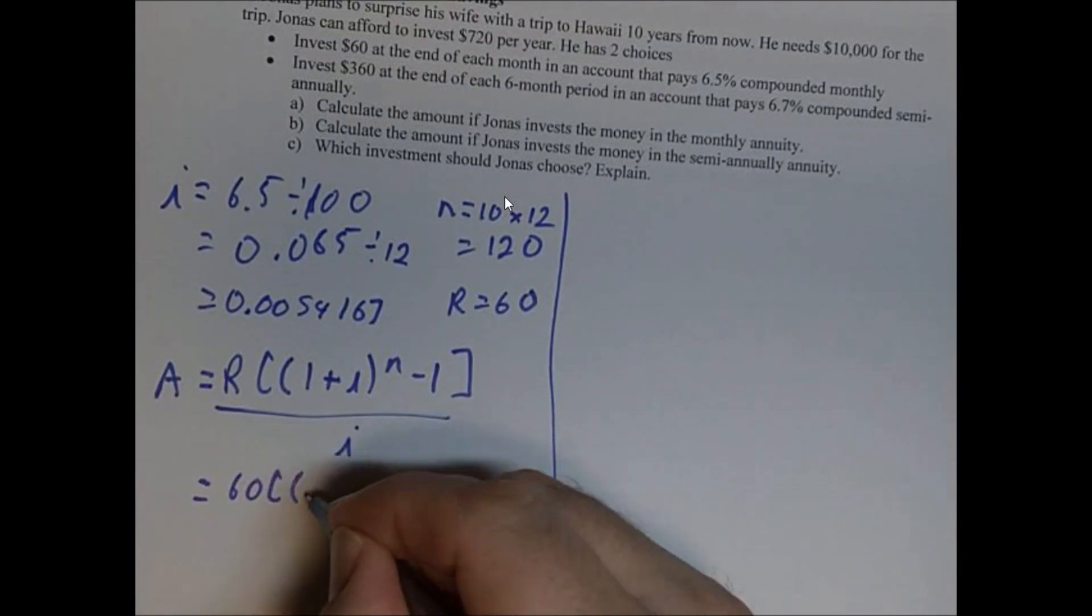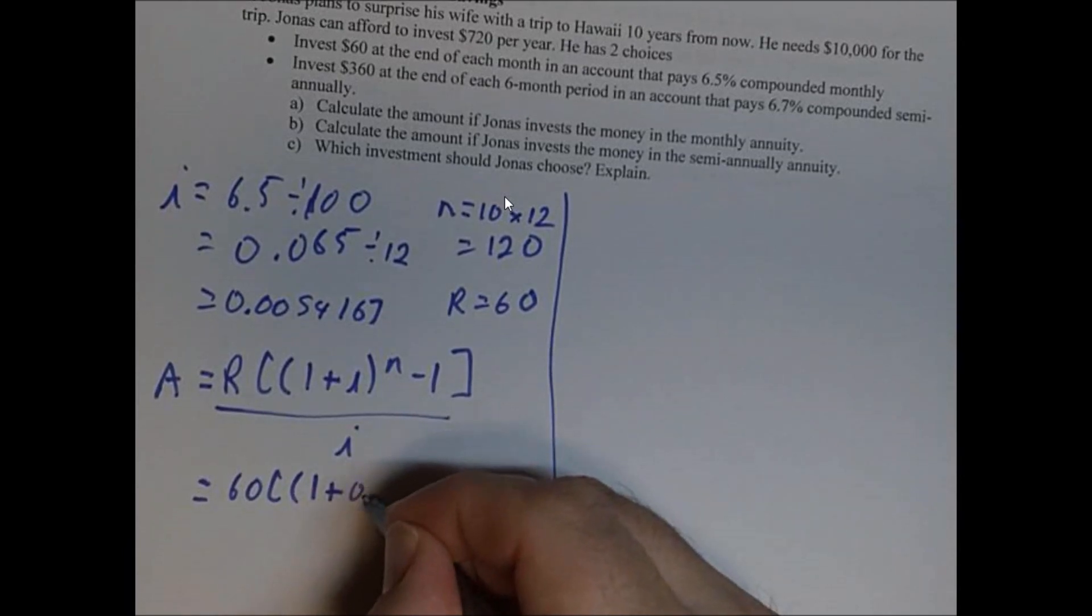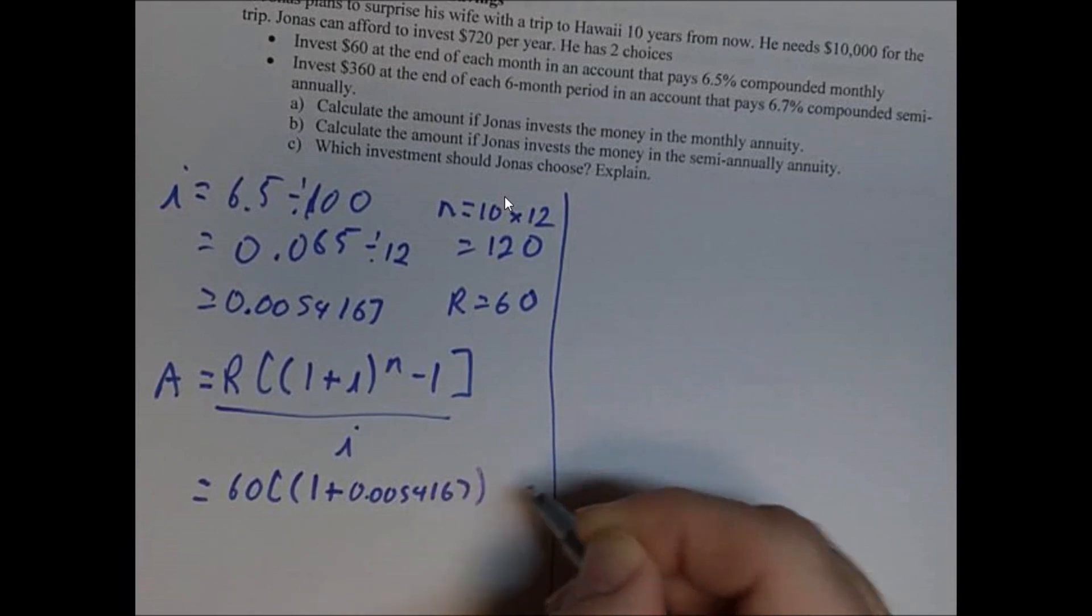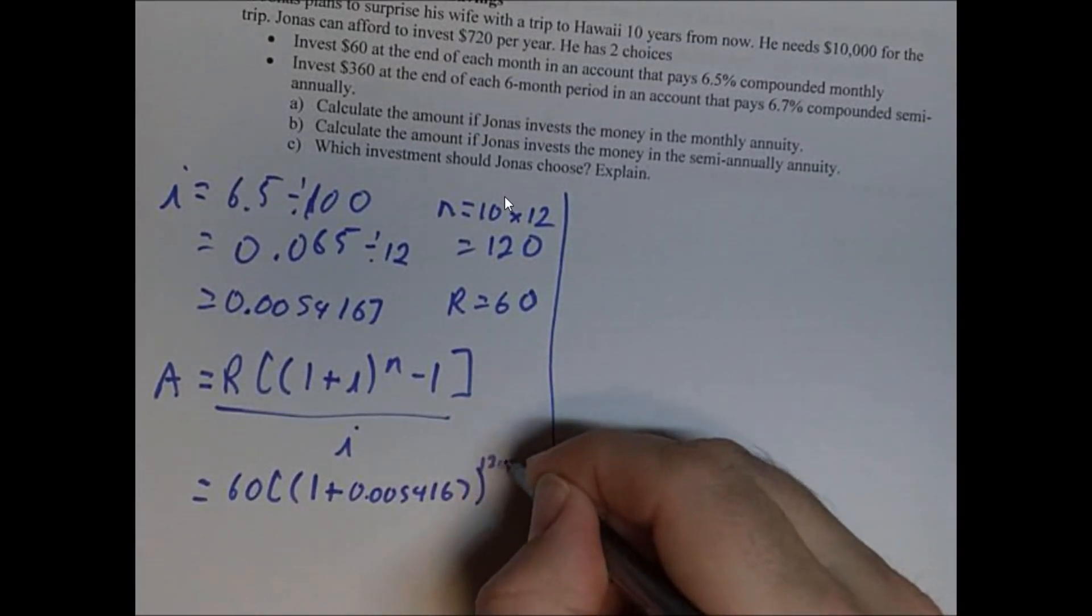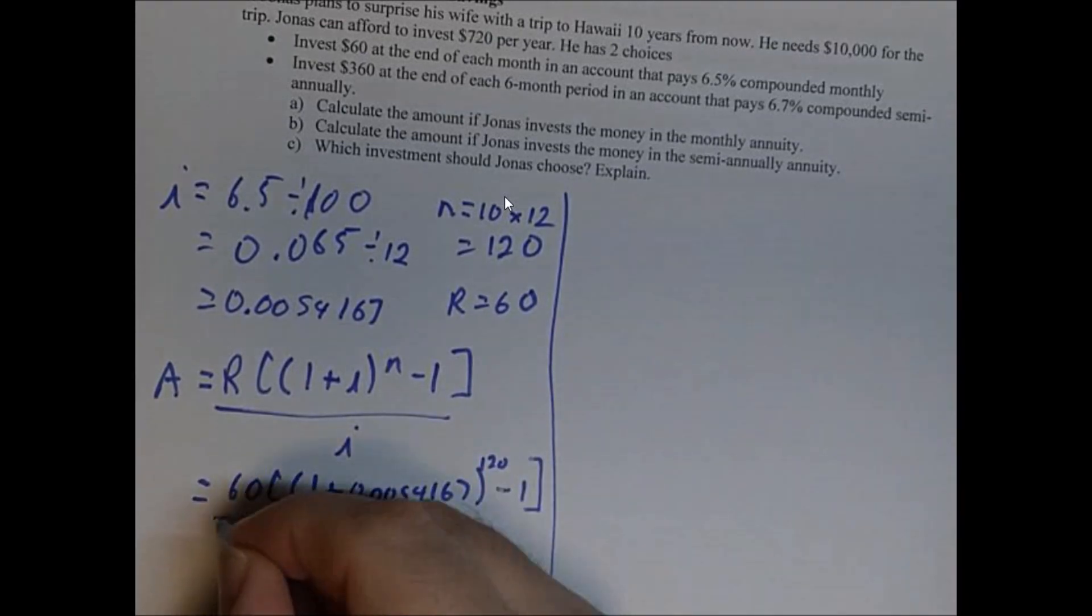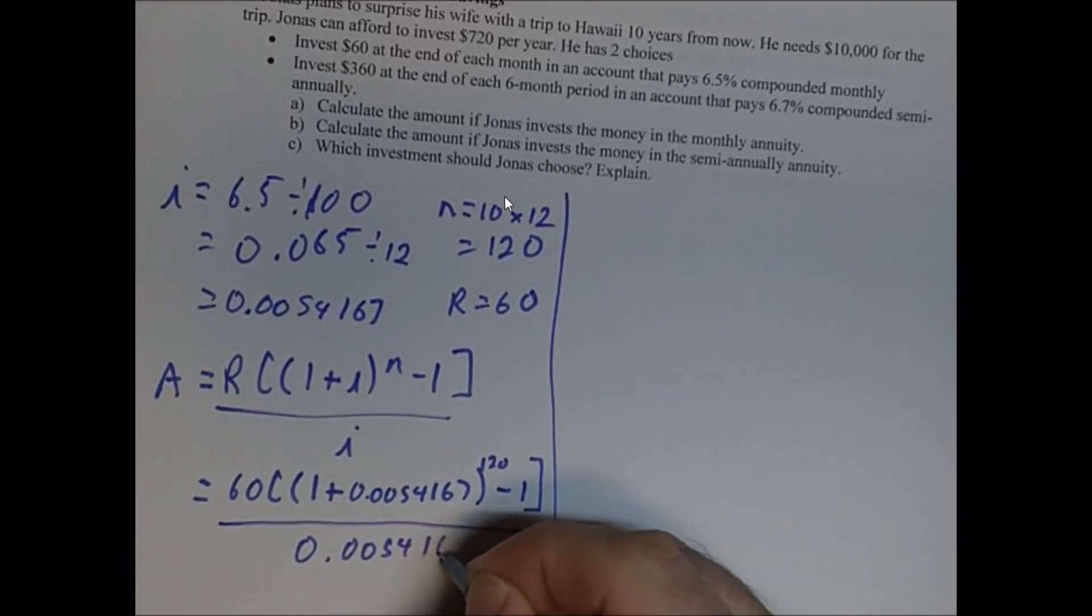1 plus, so let's take a look. So 0.0054167 to the power of N, to the power of 120 minus 1 all over 0.0054167.